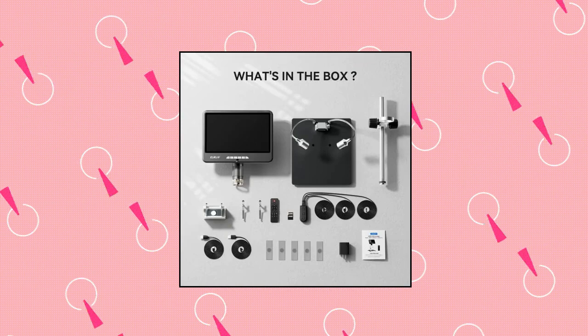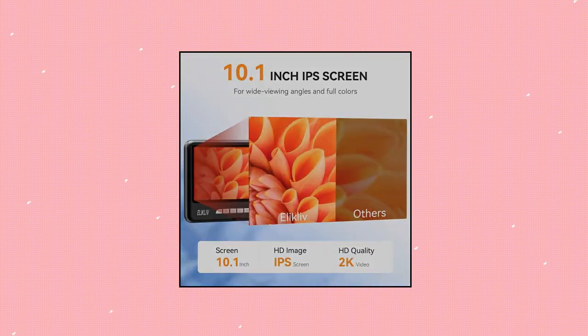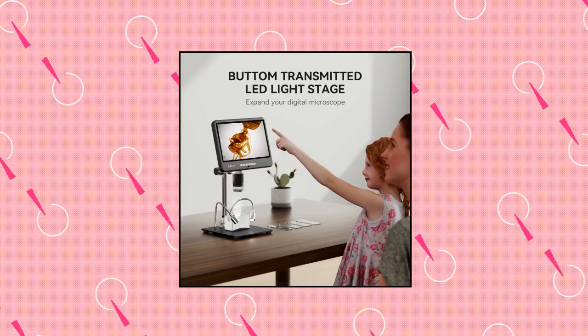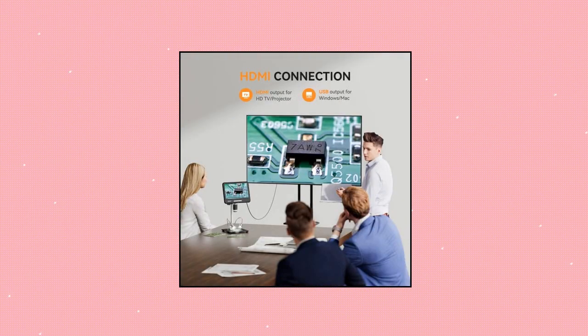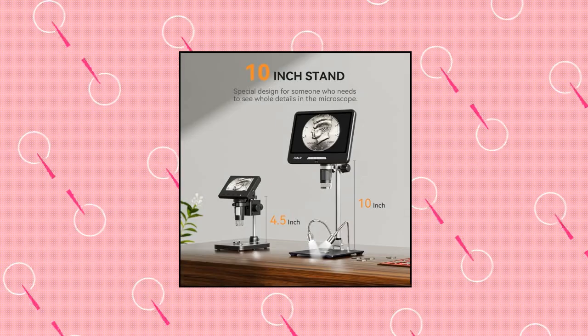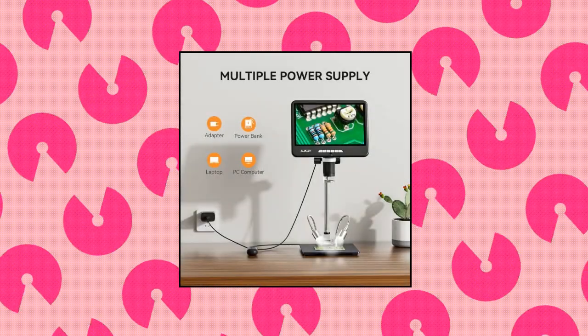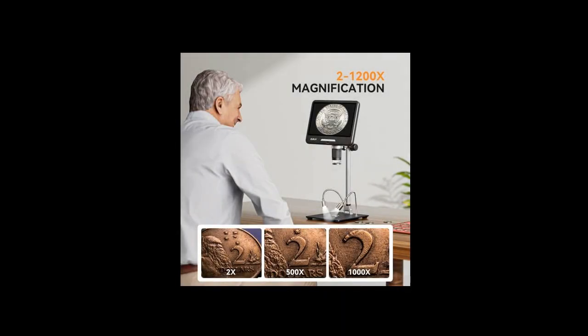Elikliv EDM402 Max 10.1 HDMI Digital Microscope 1200x with 2K IPS Screen, 2022 Upgraded. The first 2K digital microscope from Elikliv. The Elikliv EDM402 Max Digital Microscope utilizes an Ultra HD sensor to create incredible 2160p video and capture a 24MP vivid color image. With 2K resolution, you can observe and savor the details and various subtle movements in an amazing microcosm.